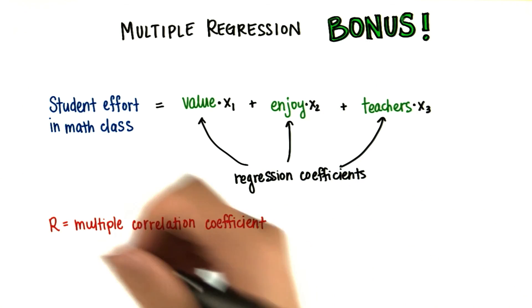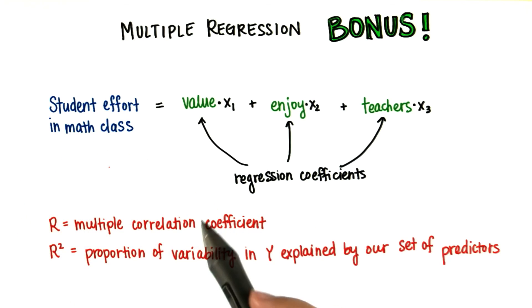Usually, we're more interested in r squared, which tells us the proportion of variability in y explained by our set of predictors.